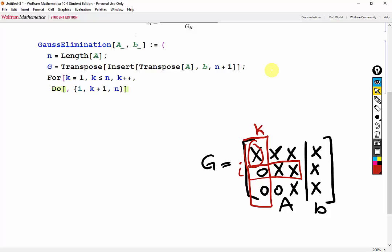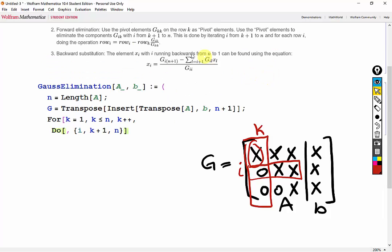Now for the body of our do loop, we'll use the formula up here from our online notes. So we need to set G of I equal to G of I minus G of I comma K divided by G of K comma K times G of K.